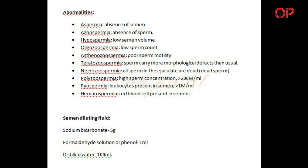Abnormalities. Aspermia: a condition in which semen is absent. Azoospermia: a condition in which sperm is absent. Hypospermia: a condition in which semen volume is low. Oligospermia: a condition in which sperm count is low. Asthenozoospermia: a condition in which sperm motility is poor. Teratozoospermia: a condition in which sperm carry more morphological defects than usual. Necrozoospermia: a condition in which all sperm in the ejaculate are dead.